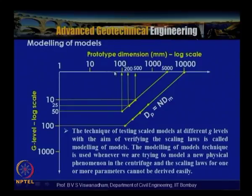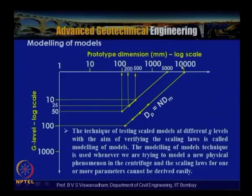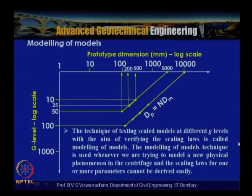On the x-axis we have the prototype dimension — this can be a footing size, a wall size, or an embankment size. At G level equal to 1 they represent the prototype dimensions at full scale. On the y-axis is the G level. The technique of testing at different G levels to verify the scaling laws is called modeling of models.